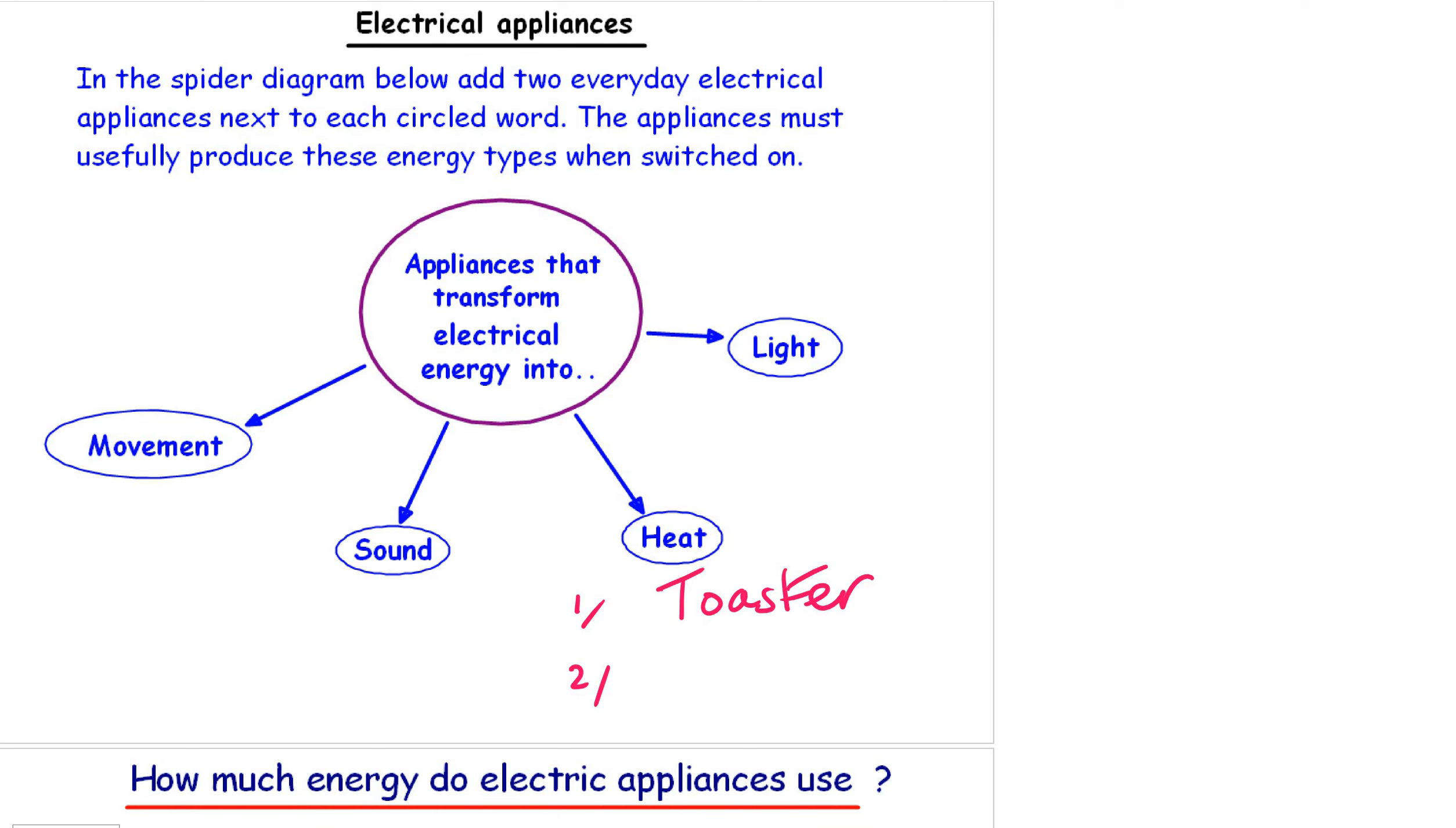Hello year sevens, lesson three in our energy booklet. Let's go through what we saw last time. In lesson two, electrical appliances that transform electrical energy into useful movement, sound, heat and light. Let's check we got the right answers. Heat: toaster, kettle, electric oven, electric heater, curling tongs. Light: light bulbs, TVs, mobile phones. Sound energy: TVs, mobile phones, loudspeakers, PlayStations. Movement energy: a whisk, drill, fan, electric car. Let us move on now.